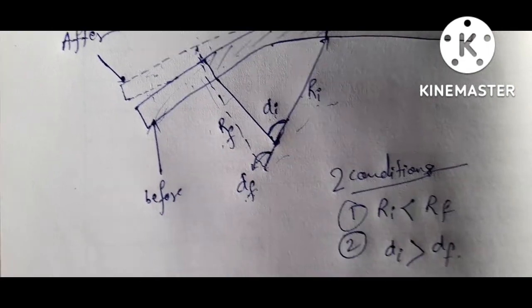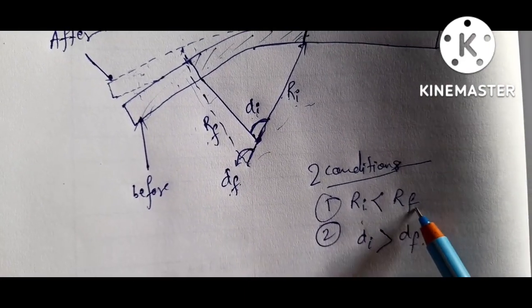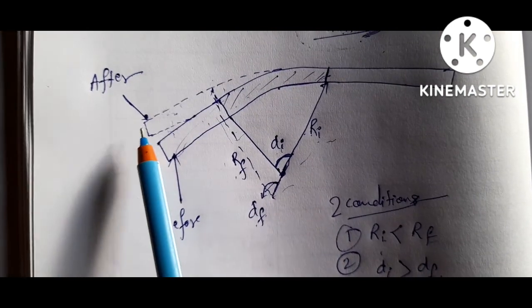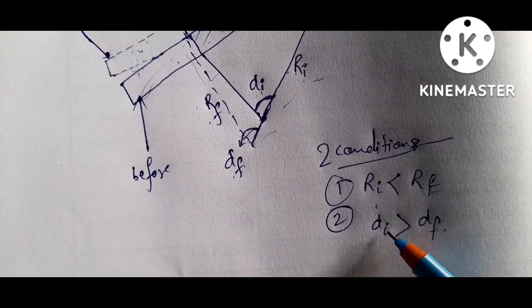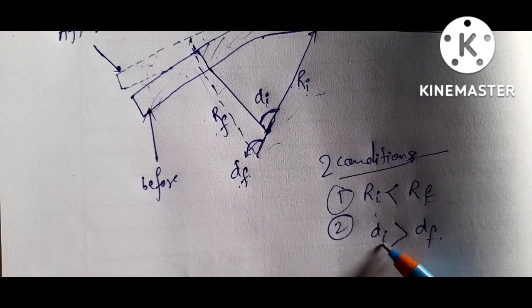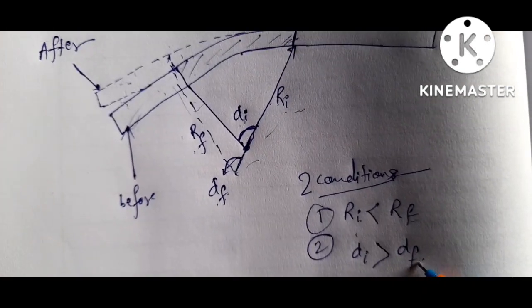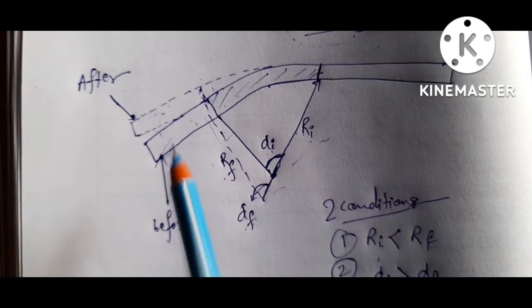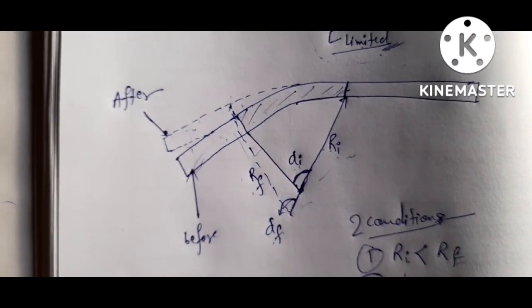In the first case, if RI is less than RF, that gives chances for spring back. In the second case, if the initial bend angle alpha-I is greater than the final bend angle alpha-F, that is also a condition giving chances for spring back.